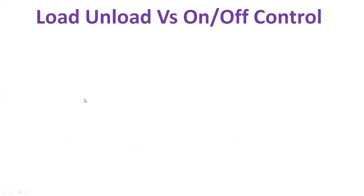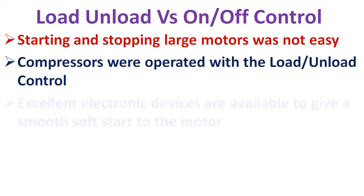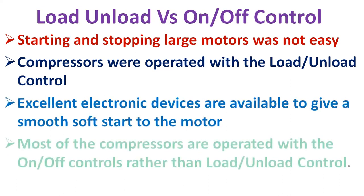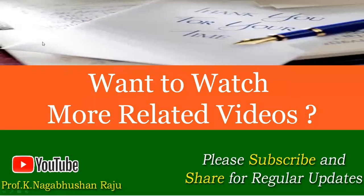In earlier days, starting and stopping large motors created stress on motors and starting devices, so compressors ran in load-unload mode — the motor kept running but the compressor did not compress air, meeting only no-load losses. Nowadays, excellent electronic soft-start devices give smooth motor starts, avoiding stress on motors and starting equipment. Their cost is much less than the savings from avoiding no-load losses, so most compressors are now operated with on-off controls rather than load/no-load control.